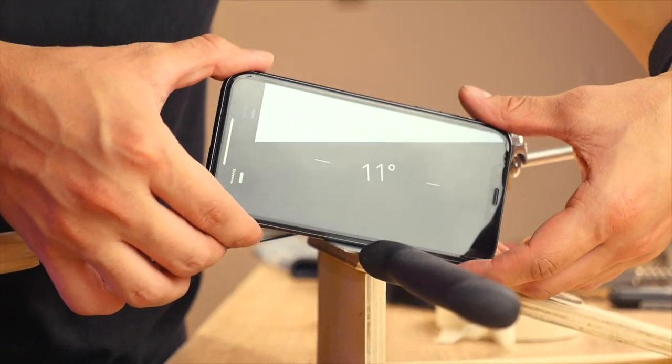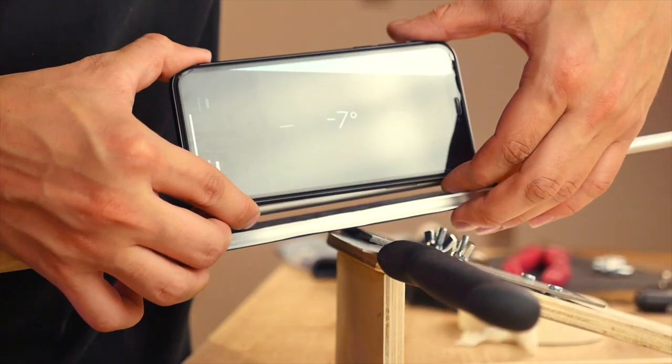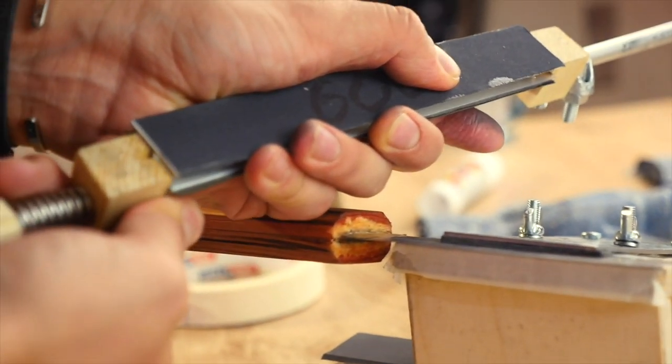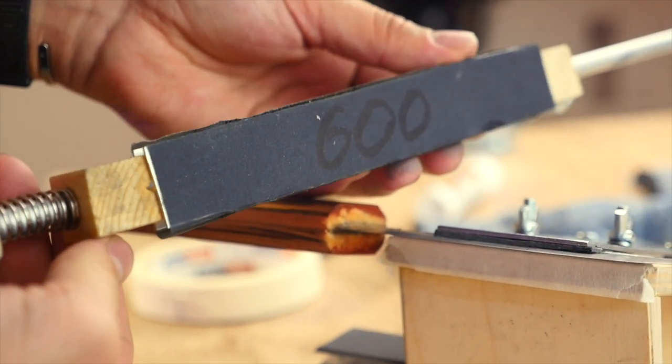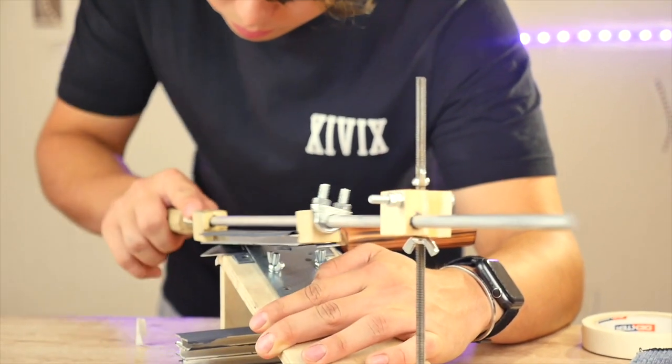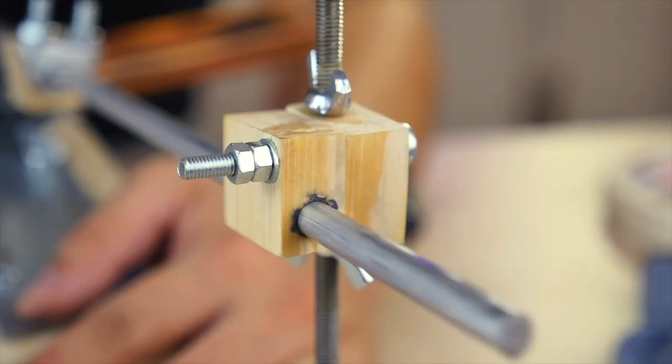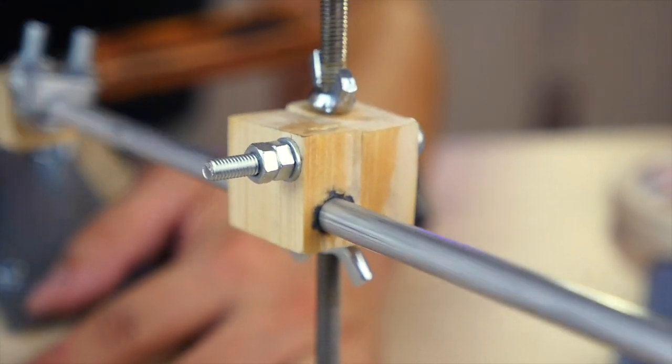The optimal sharpening angle will be 20 degrees. We set it on the sharpener. We start with 600 grit grindstone and move up and down. See how well the hinge works. The angle does not change during the sharpening process. This is very important.